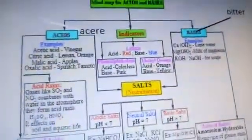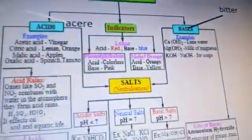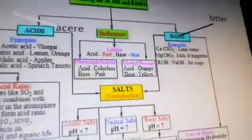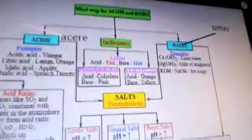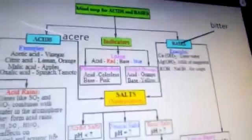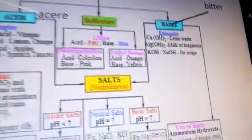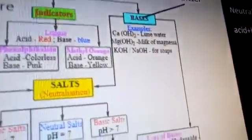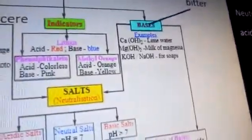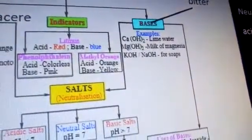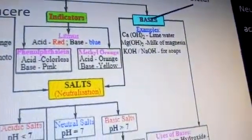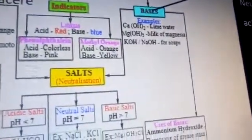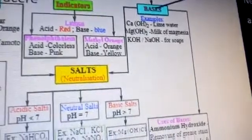Phenolphthalein: in an acidic medium it is colorless, and in a basic medium it changes to pink. Methyl orange: whenever we put it into an acidic solution it turns orange, and in a basic solution it turns yellow.